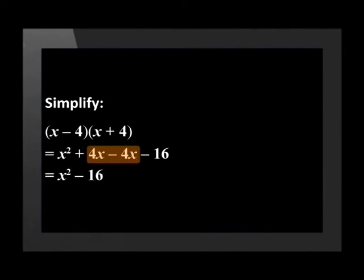Our like terms 4x and minus 4x add up to zero, giving us a final answer of x squared minus 16.